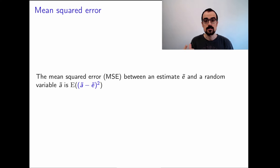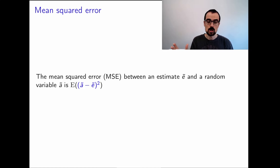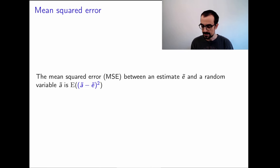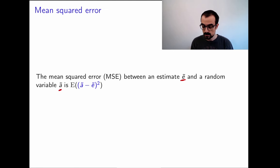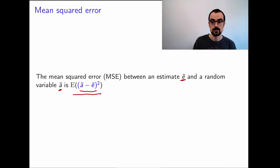We use the mean square often to quantify the difference between two random variables. The logic is that you want to compare these two objects by quantifying the energy of their difference. So if you have an estimate E that is trying to approximate a random variable A, you compute their difference and then consider the mean square of their difference. This is a popular metric to quantify estimation error in statistics.